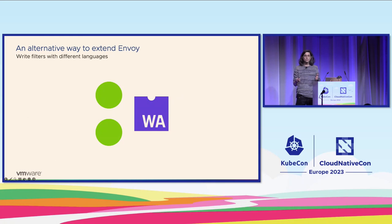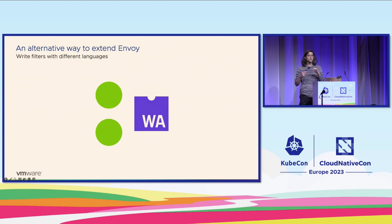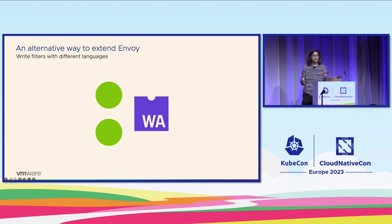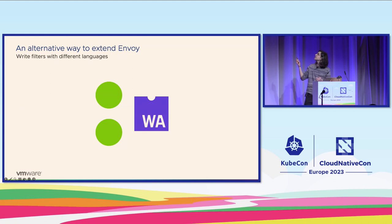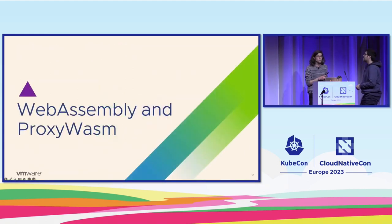And this is where WebAssembly enters the scene. With WebAssembly, you can compile those filters into a format that can be loaded by Envoy, and then implement those custom behaviors in a much easier way than coding them in C++ and introducing them via compilation. To talk about that, my teammate Rafael is going to tell you about WebAssembly and Proxy Wasm.